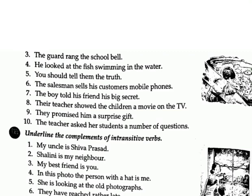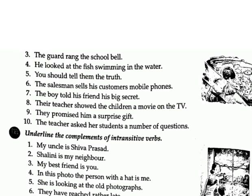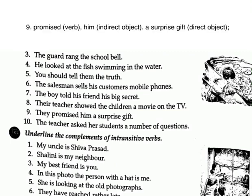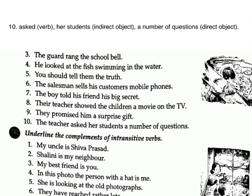8. Their teacher showed the children a movie on the TV. Answer: showed — verb; the children — indirect object; a movie — direct object. 9. They promised him a surprise gift. Answer: promised — verb; him — indirect object; a surprise gift — direct object. 10. The teacher asked her students a number of questions. Answer: asked — verb; her students — indirect object; a number of questions — direct object.